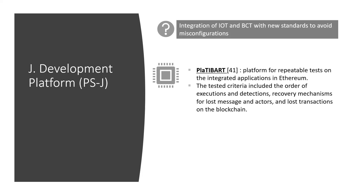Development platform: the integration of IoT and blockchain is very new and standards and common practices for developing are immature. The problem manifests in insecure configurations or misconfigurations of Ethereum smart contracts. One proposed solution by Platibart is a platform for repeated tests on integrated applications, with demonstrations conducted on Ethereum. The actor pattern was applied with a domain specification language to define clients in the network via DSL configuration files. The tested criteria included the order of executions, detections, and lost transactions on the blockchain.